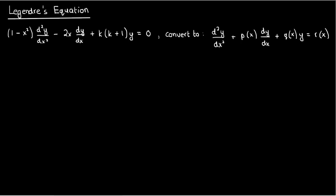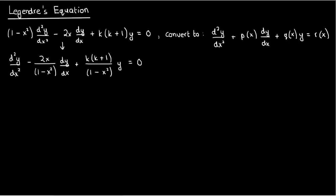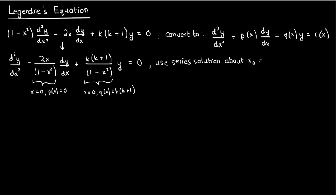If we divide everything in the Legendre ODE by 1 minus x squared, we get d²y/dx² minus 2x over 1 minus x squared dy/dx plus k times k plus 1 over 1 minus x squared times y equals 0. Checking at x equals 0: r is just 0, so it's defined for all x. p and q are only undefined at x equals negative 1 and x equals positive 1, but at x₀ equals 0 they're both fine, so a regular series solution about x equals 0 is possible.